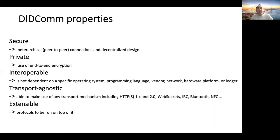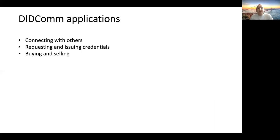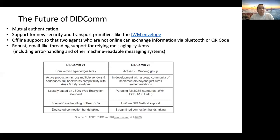DIDComm is essentially an envelope — you can wrap any data or message in this standardized envelope and send it. Key properties: it's secure and designed for peer-to-peer decentralized connections with end-to-end encryption; it's private, interoperable — not dependent on specific OS, programming language, or network; and crucially it's transport-agnostic, meaning you can send DIDComm messages over HTTP, WebSockets, or even Bluetooth for offline communication. It's extensible so other protocols can run on top of it.